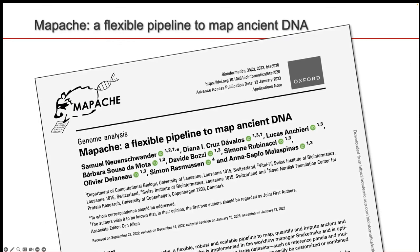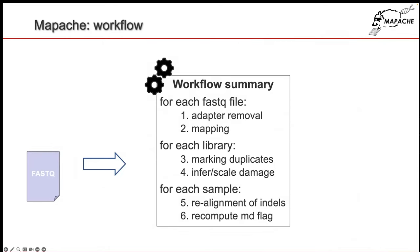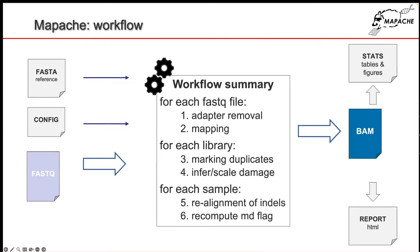We developed this workflow called Mapache, a flexible pipeline to map ancient DNA. So what does Mapache do? We take a FASTQ file with sequences, process it through the mapping workflow, and require a reference genome and a configuration file to parameterize the workflow. At the end, we get the alignments as a BAM file, and from that BAM file we derive statistics to assess whether the mapping makes sense. Everything is encapsulated in an HTML report.